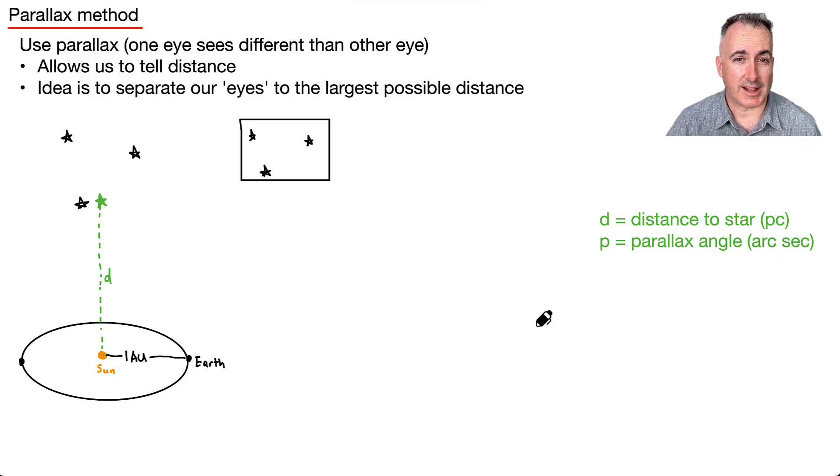It turns out your brain is really good at telling—the more movement there is, the closer that thing is. If you're further away, there's less movement from one eye to the next because they're each seeing the object slightly differently. Your brain takes care of this for you. But it turns out to tell the distance to a star, one method is very accurate, it's just very difficult to do.